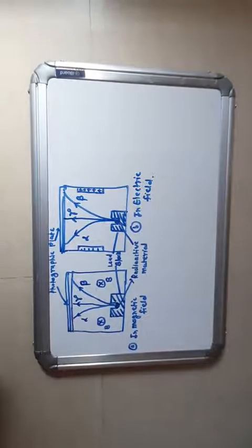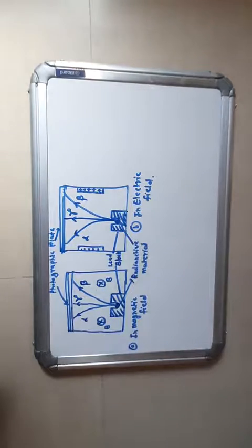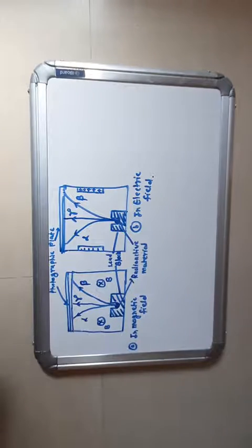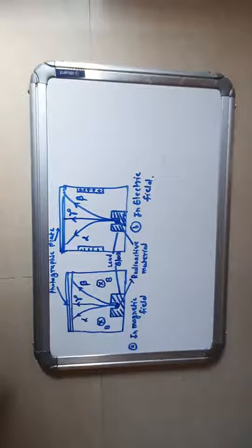The existence of three types of radiations is demonstrated by a simple experiment. A small quantity of radioactive material is placed at the bottom of a hole drilled in a lead block, as shown in figures 2a and 2b.